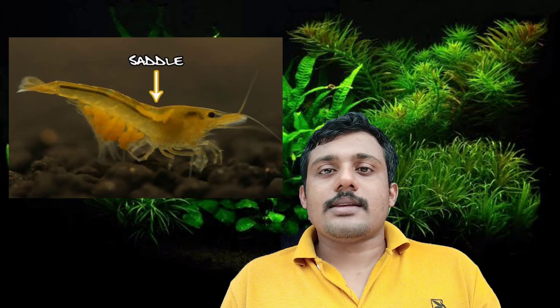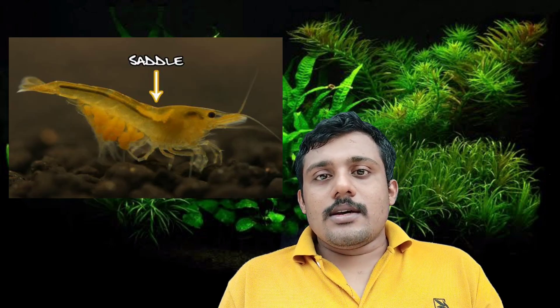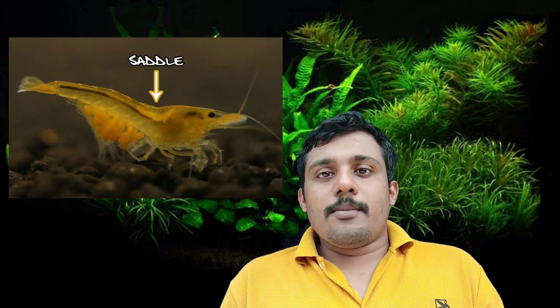The third thing is the saddle part. We have a saddle part. This is a V-shaped form.